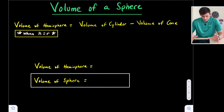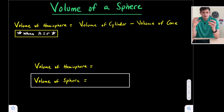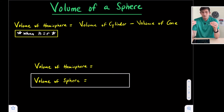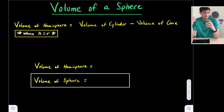If we think about a sphere, we know if we were to cut it in half, we would have two halves of a sphere, which we call a hemisphere. At the top of the screen, we actually have an equation that the volume of a hemisphere is equal to the volume of the cylinder minus the volume of a cone, when the height of the cone and the height of the cylinder is equal to the radius of the cylinder, cone, and the hemisphere.